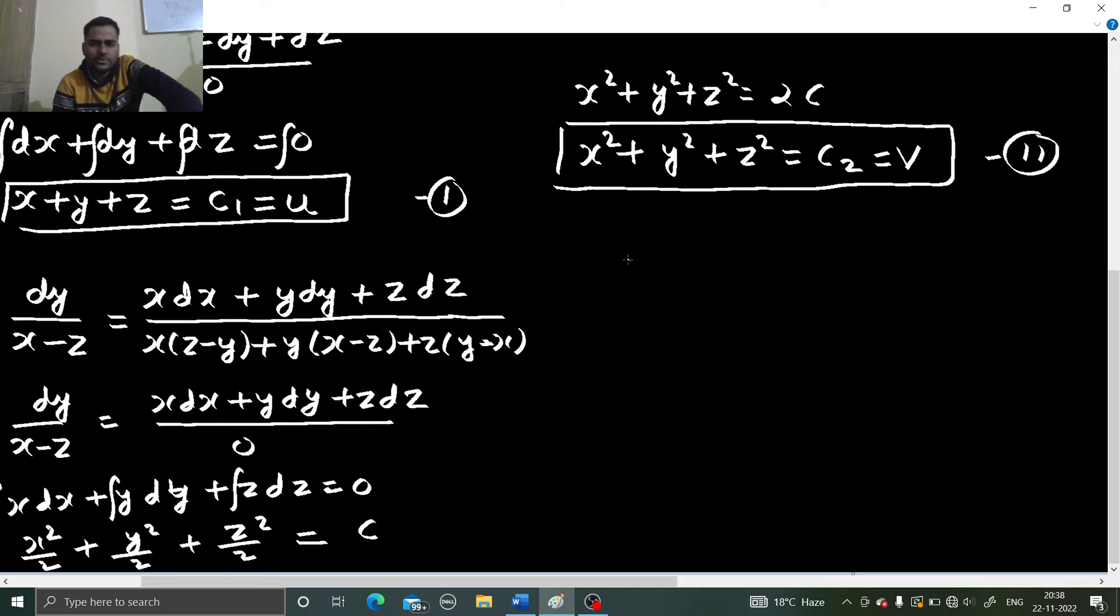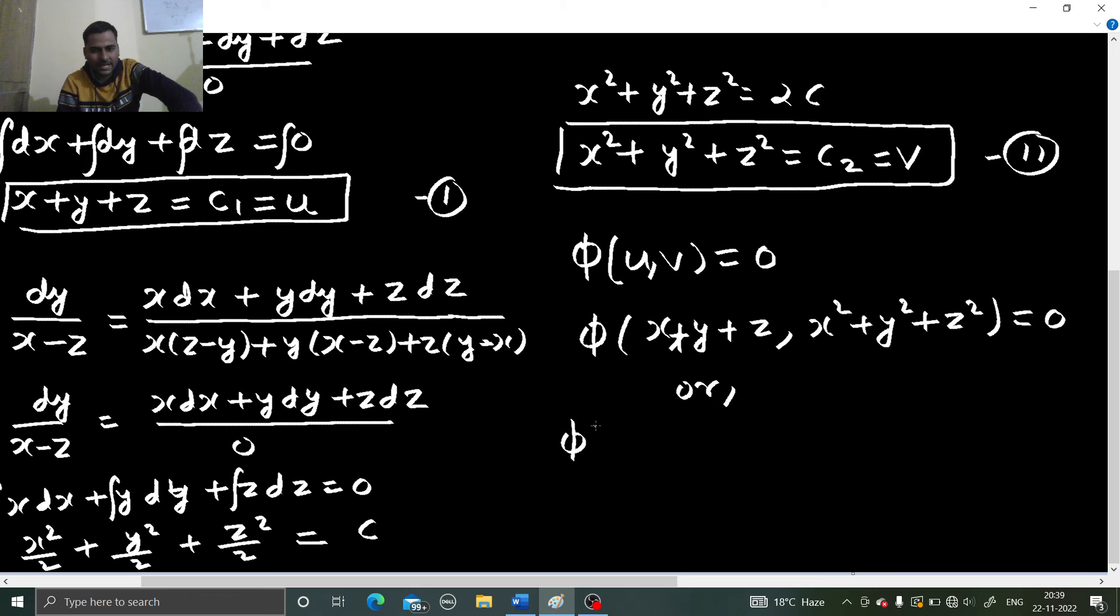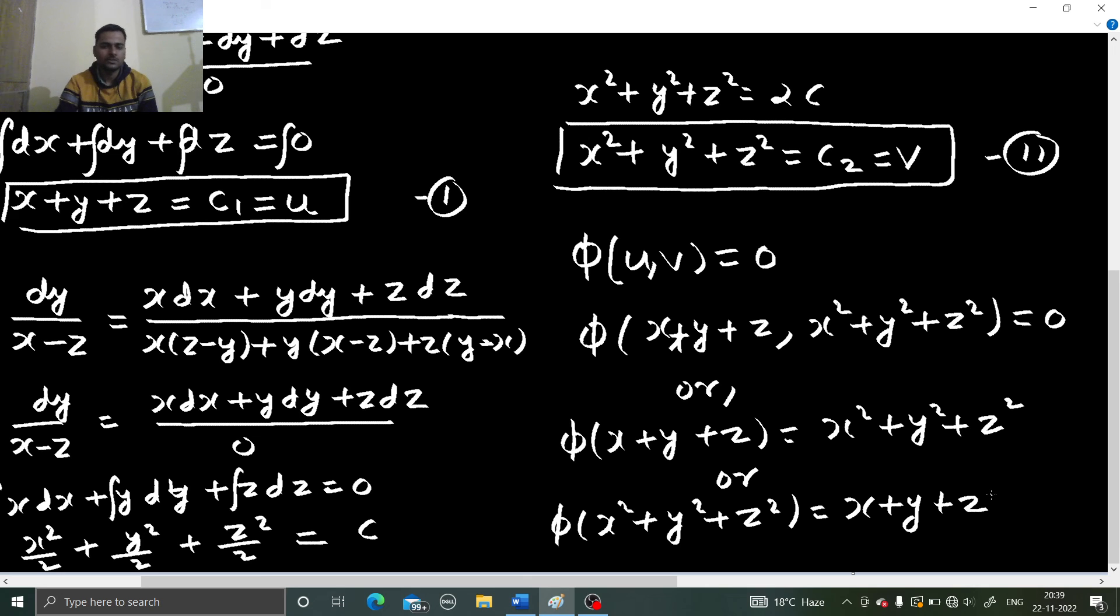Now, directly write the solution. So what is there? You have to solve this. So phi of u comma v equals to 0. So phi of u is x plus y plus z, v is x square plus y square plus z square. There are other multiple ways of writing this. You can write phi of x plus y plus z to be equal to x square plus y square plus z square or if you like you can write phi of x square plus y square plus z square to be equal to x plus y plus z. So this completely depends upon the student. So that was it.